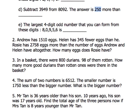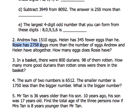The question says: Andrew has 1,510 eggs. Now Helen has 345 fewer eggs than him. 'Fewer' means lesser. And Rosie has 2,758 eggs more than the number of eggs Andrew and Helen have altogether. So how many eggs does Rosie have? Simple question.